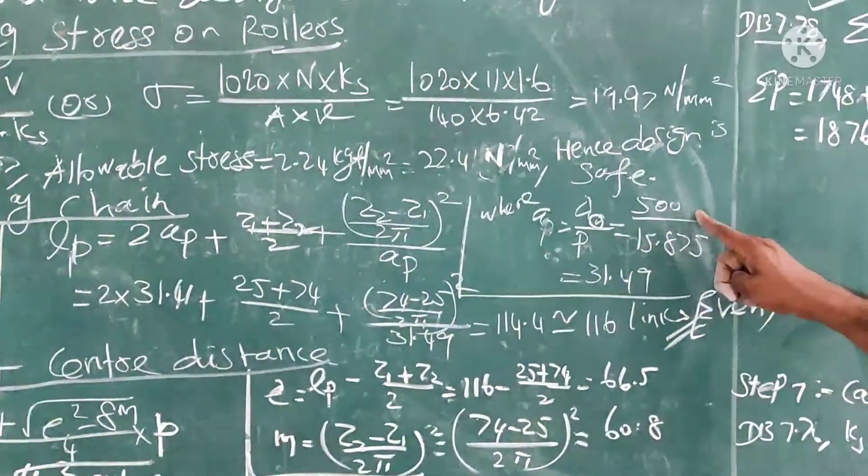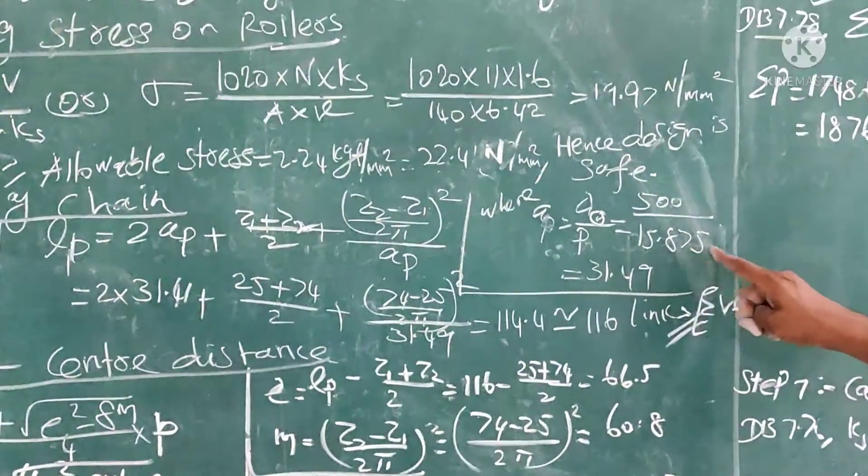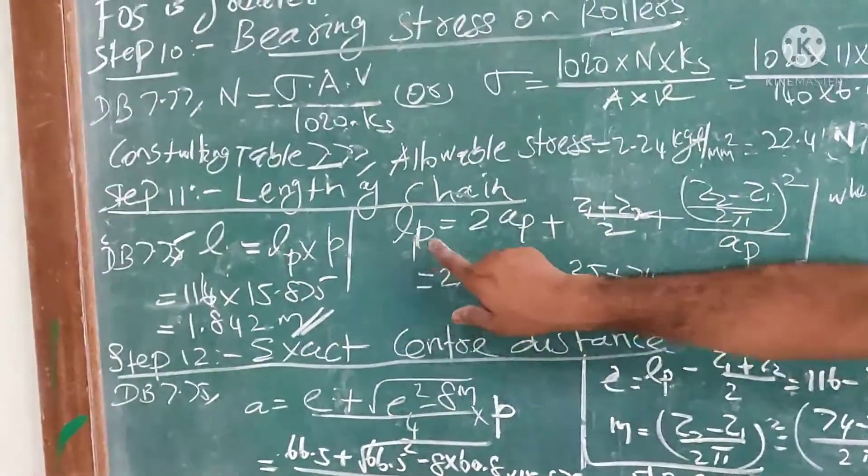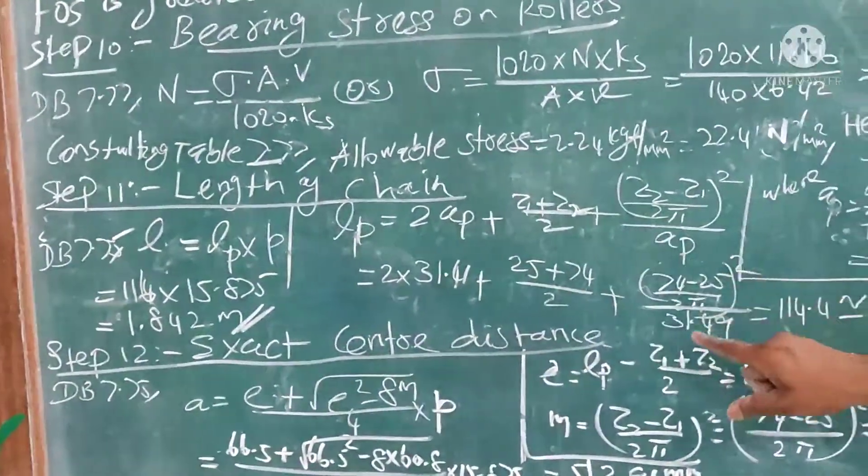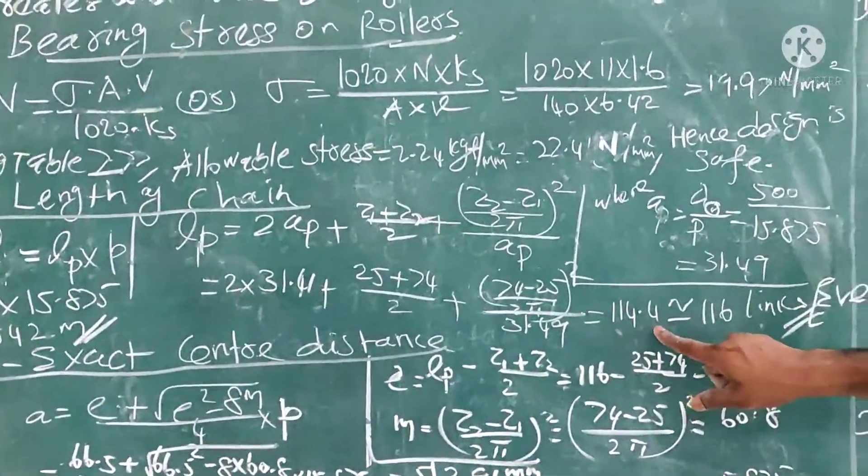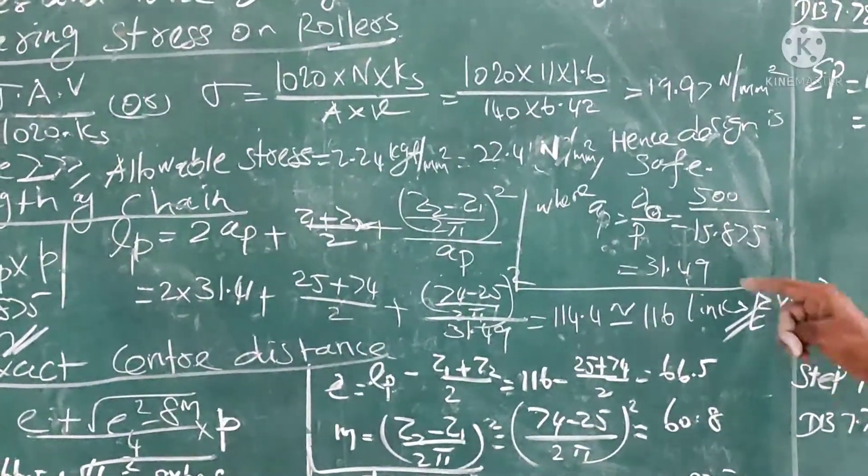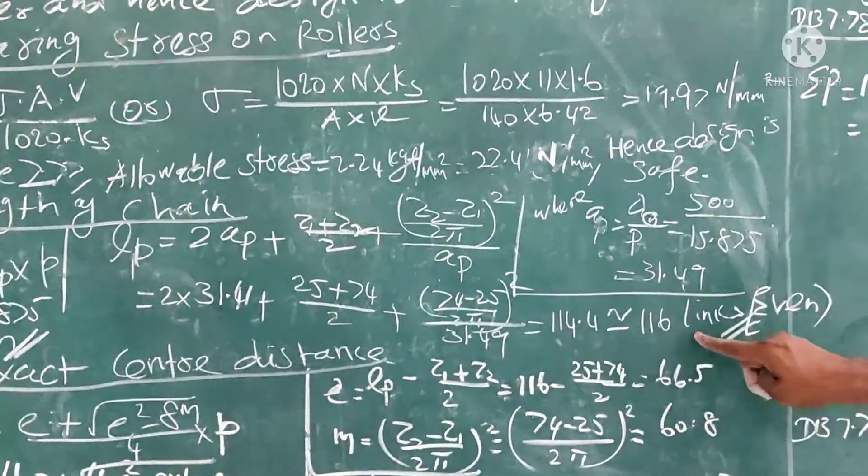where AB is A₀/P. A₀ is initial center distance = 500/15.875 = 31.49. Now substitute this value in LB formula, you get this value as 114.4.